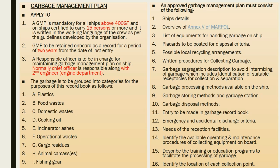The garbage management plan is applicable for ships above 400 GRT and certified to carry 15 persons or more. It should be retained on board for 2 years. The officers responsible for maintaining the garbage management plan are normally the chief officer along with the second engineer in the engine department. Types of garbage include: plastic, food waste, domestic waste, cooking oil, incinerator ash, operational waste, cargo residue, animal carcasses, and fishing gear.